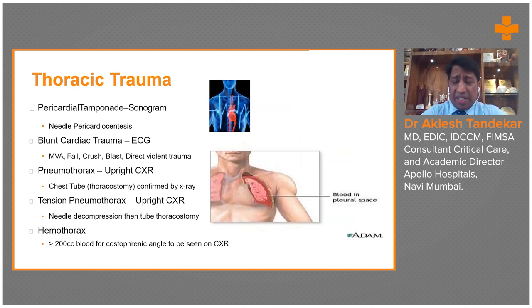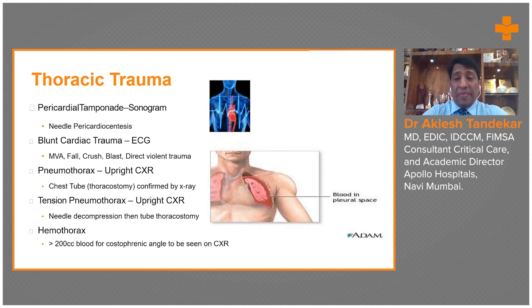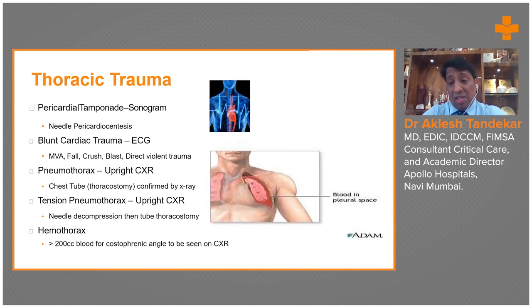Spinal cord injuries are treated with vasopressor support. Steroids can be given immediately, but the recommendations are still not very strong. Vasopressor support and immediate surgical correction are key. Prevention of further injury is essential — stabilizing and immobilizing the patient with a spine board is very, very important. If these patients are moved, a partial spinal cord injury can be converted into a complete spinal cord injury, so immobilization is the key.